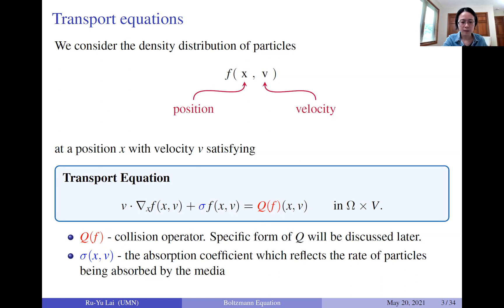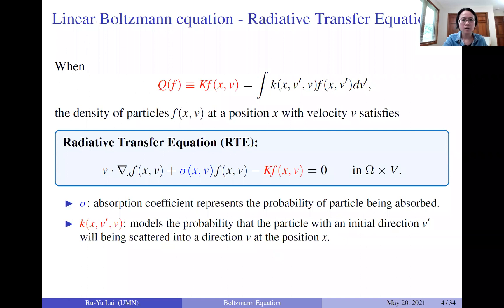In some situations, when sigma is zero, we can take a special form for the collision operator — that will be the nonlinear Boltzmann equation I will introduce in the second part of the talk. For the radiative transfer equation, the collision operator Q takes the form of an integral with respect to velocity v-prime, with a coefficient k inside this integral.